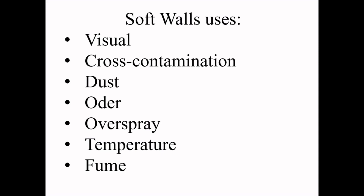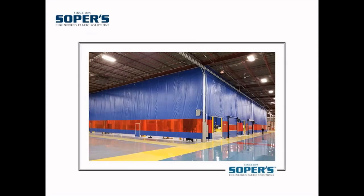Think about a welding area. Here's an example where the customer wanted the welding material in the center, but without visual control at the top. We left the bottom open to bring makeup air or fresh air into the room, and inside the room they had containment control provided by an air quality company.